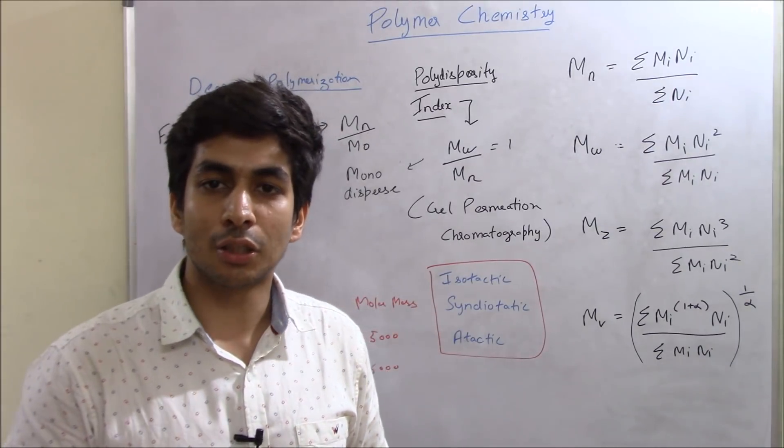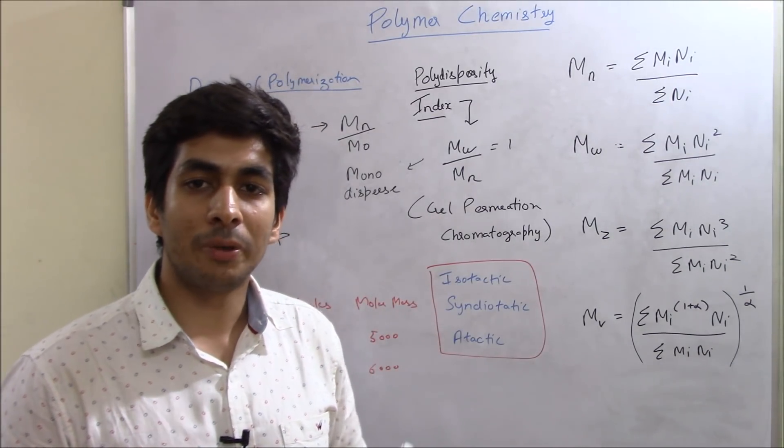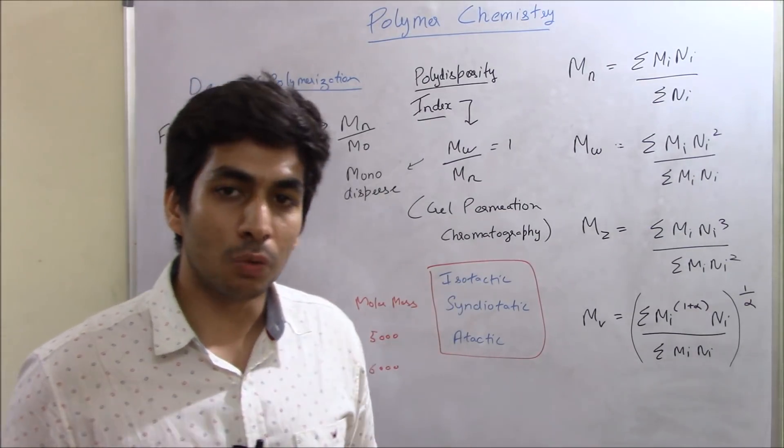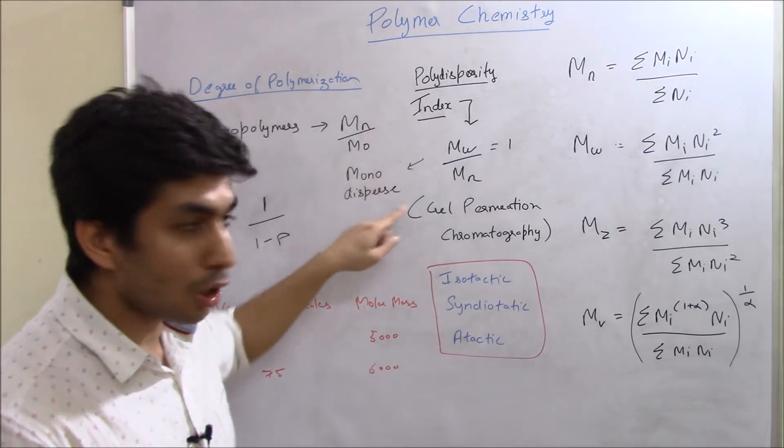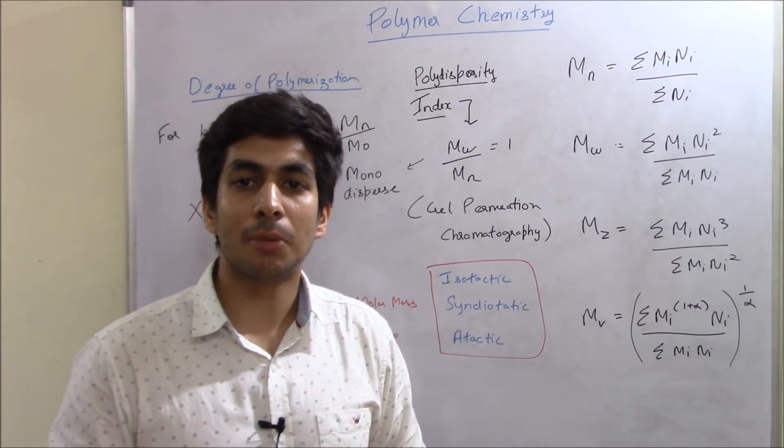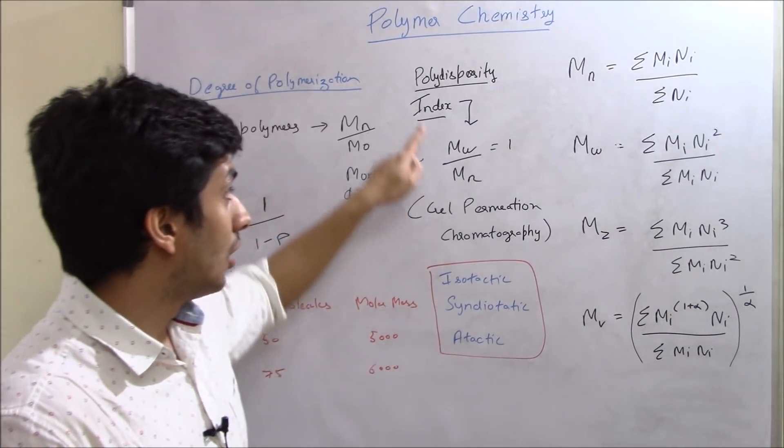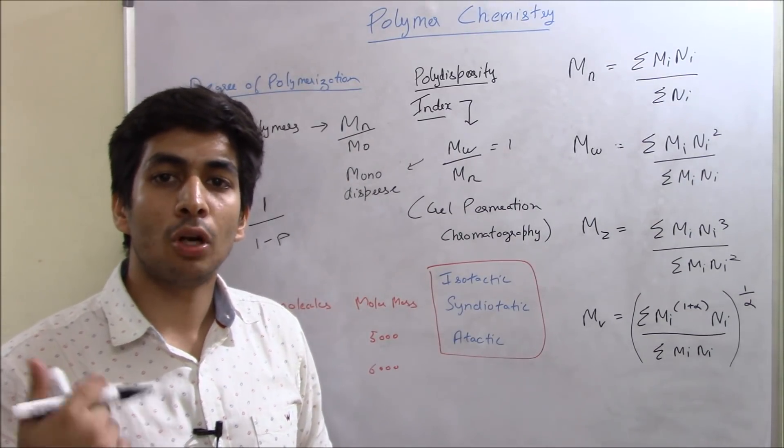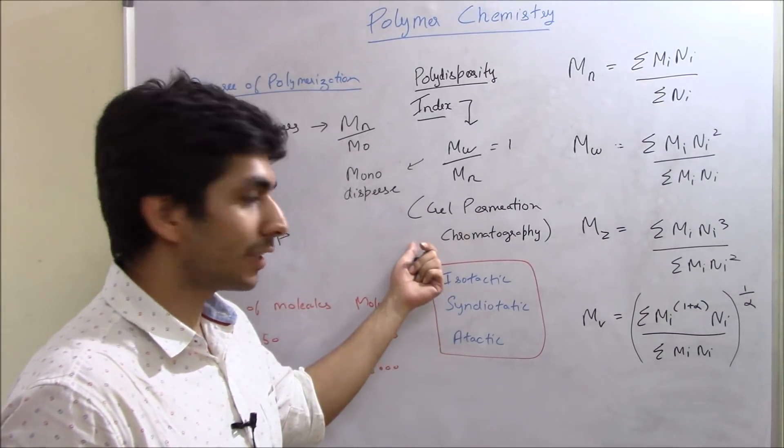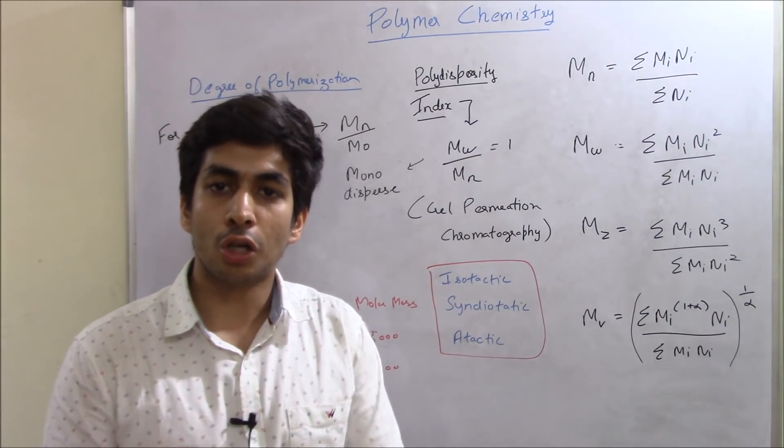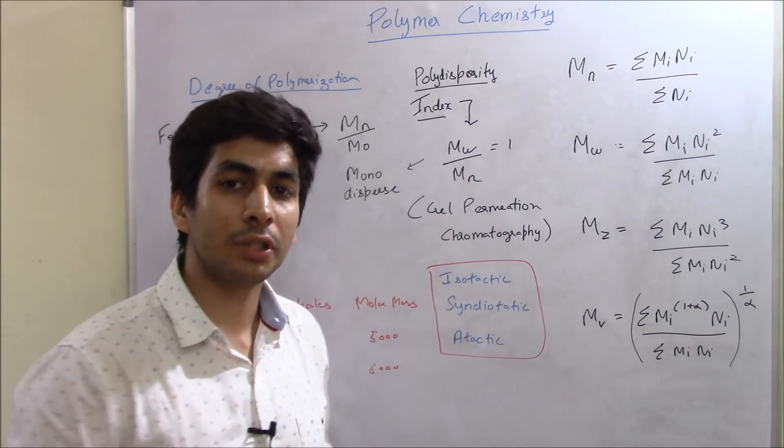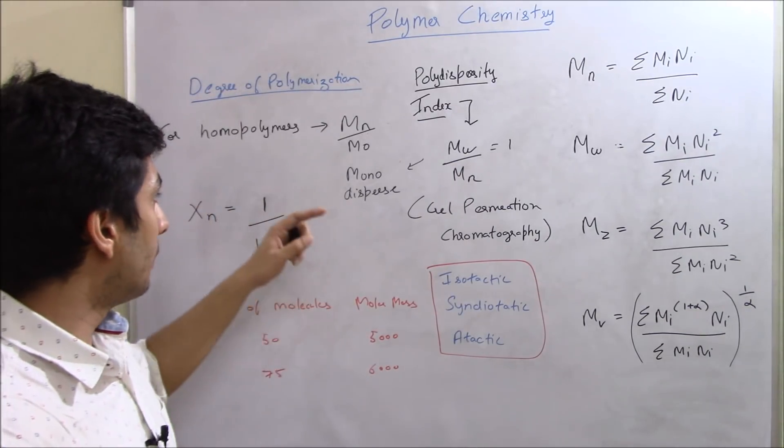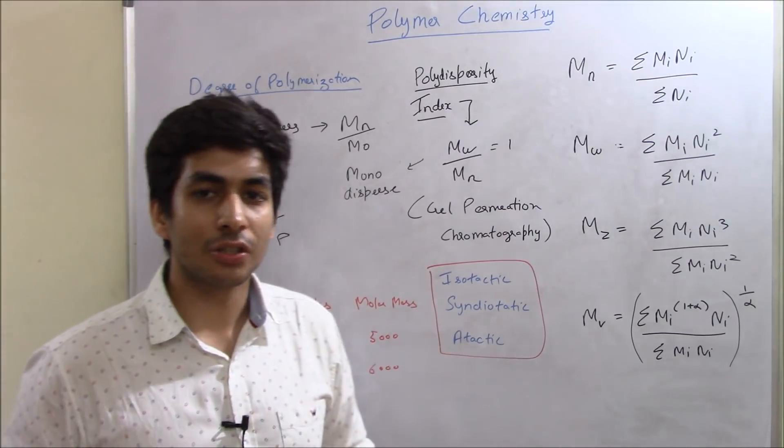And if it is equal to one, then it is said to be monodispersed. So if it is monodispersed, then your MW by MN is equal to one. That means your number average molecular weight and your weight average molecular weight is the same. And this question was asked for two marks in your CSIR NET June 2017 exam. It was given that a solution is monodispersed. So what is the relation between the weight average and the number average molecular weight? So they would be equal. Now there's one question that can be asked in terms of analytical chemistry. And that question is that how do you find the polydispersity index? So you calculate the polydispersity index with a technique called gel permeation chromatography.